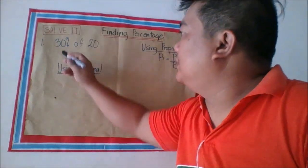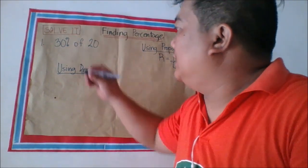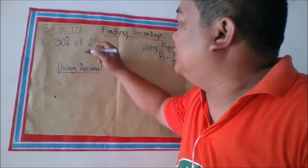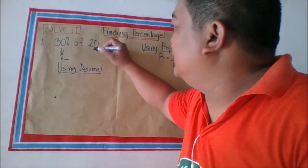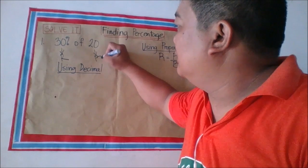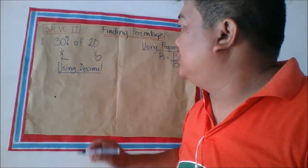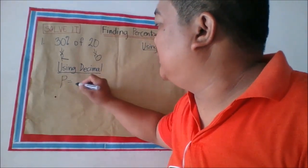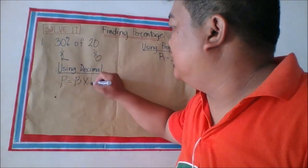Finding percentage. Example: 30% of 20. Identify the percentage, base, and rate. 30% is the rate and 20 is the base because of the word 'of.' To find the percentage, the formula is: percentage equals base times rate.